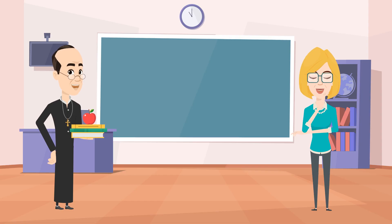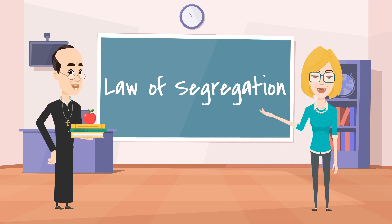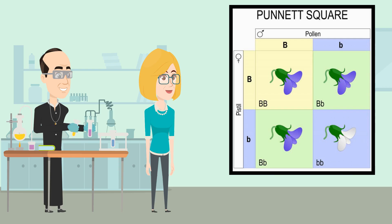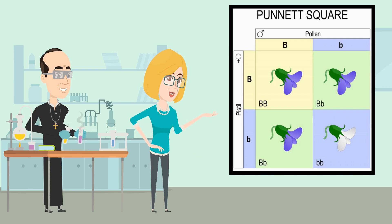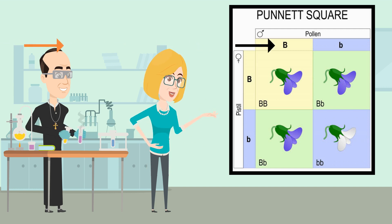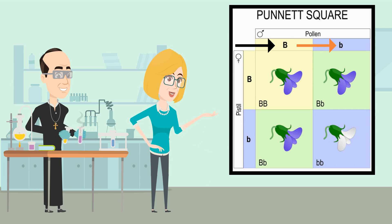Let's now talk about the second law, the law of segregation. The law of segregation states that inherited factors have an equal and random chance to be passed onto offspring. Using our previous flower example, this means that even if we know a purple flower must carry the dominant factor for purple, it may also carry the recessive factor for white, and each factor has an equal chance of being passed onto offspring.